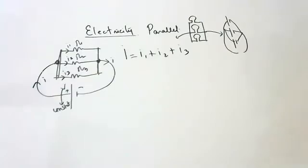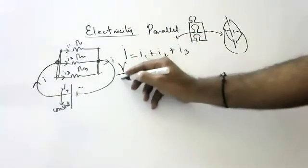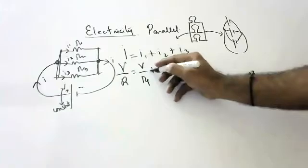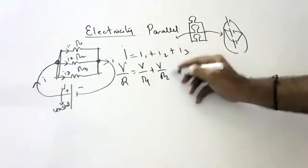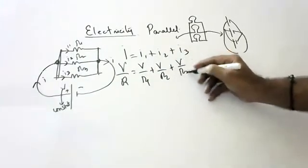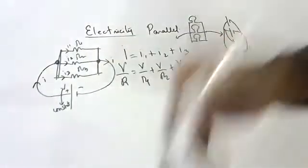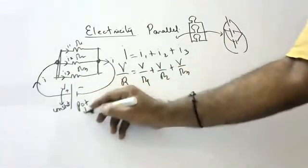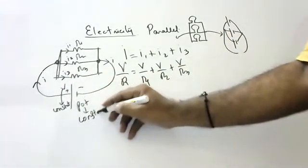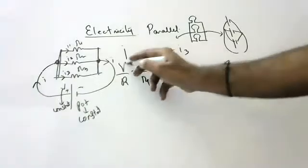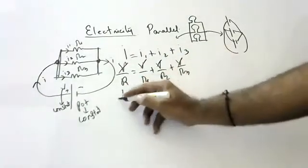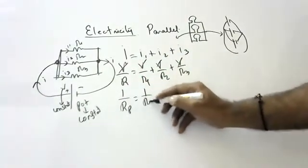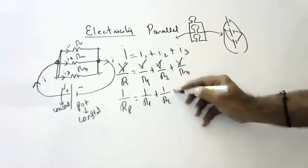According to Ohm's law, I = V/R. So I1 = V/R1, I2 = V/R2, I3 = V/R3. We are not writing V1, V2, V3 because potential is constant — it is the same. Canceling potential on both sides, children will get: 1/R_parallel = 1/R1 + 1/R2 + 1/R3.